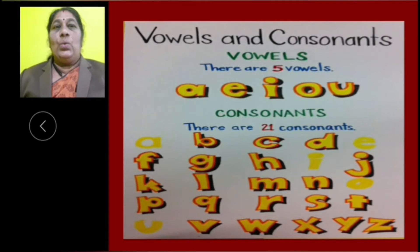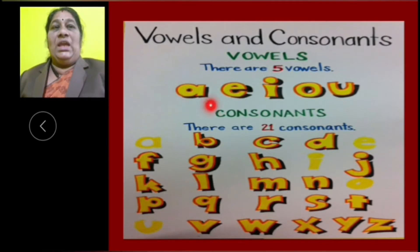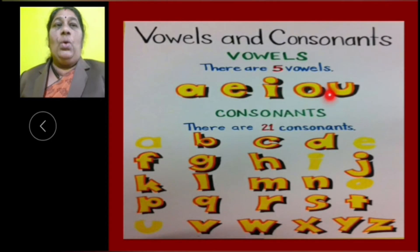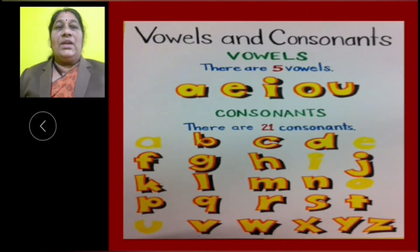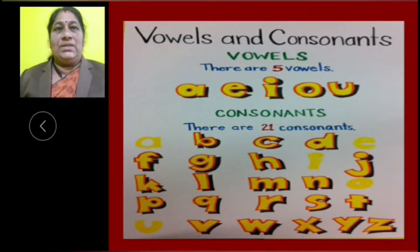What are vowel letters? A, E, I, O, U are the 5 vowel letters. Rest of the letters are consonant letters.